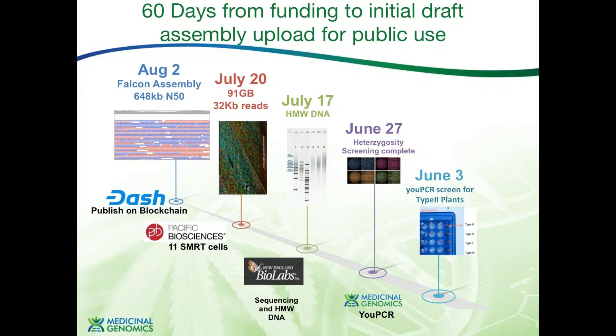After finding type 2 female plants — we wanted females because the genomes are smaller and easier to sequence — we screened them on Illumina to look for low heterozygosity rates to ensure better assembly. Those with low heterozygosity were graduated into pulse field gel electrophoresis and high molecular weight DNA preps, with a lot of help from New England BioLabs. We then sequenced using version 5 chemistry on 11 SMRT cells with PacBio, getting 32,000 base pair reads. This transformed into an assembly by August 2nd, which we put public, with a 650 KB N50 — the nearest public assembly at the time was probably 150 KB N50.